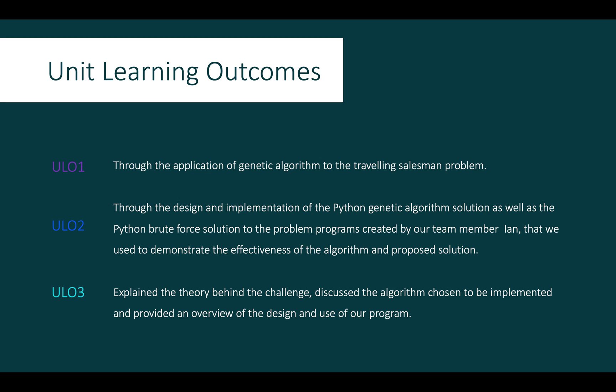The unit learning outcomes have been demonstrated throughout this submission as follows. ULO 1, through the application of genetic algorithm to the travelling salesman problem. ULO 2, through the design and implementation of the Python genetic algorithm solution, as well as the Python brute force solution to the problem programs created by our team member, Ian, that we use to demonstrate the effectiveness of the algorithm and proposed solution. And finally, ULO 3 has been demonstrated throughout this presentation as we explained the theory behind the challenge, discussed the algorithm chosen to be implemented, and provided an overview of the design and use of our program.